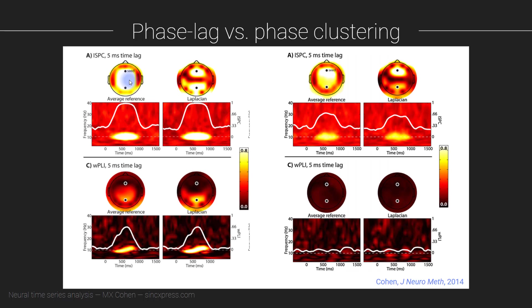The two dipoles were synchronized — generated to be synchronous at 10 Hz for around one second. With the EEG channel data, I either applied the average reference or the Laplacian reference. I then computed a time-frequency analysis of synchronization between Fz and all other electrodes. The color in the maps shows synchronization strength in the alpha band, which is where I simulated the synchronization.